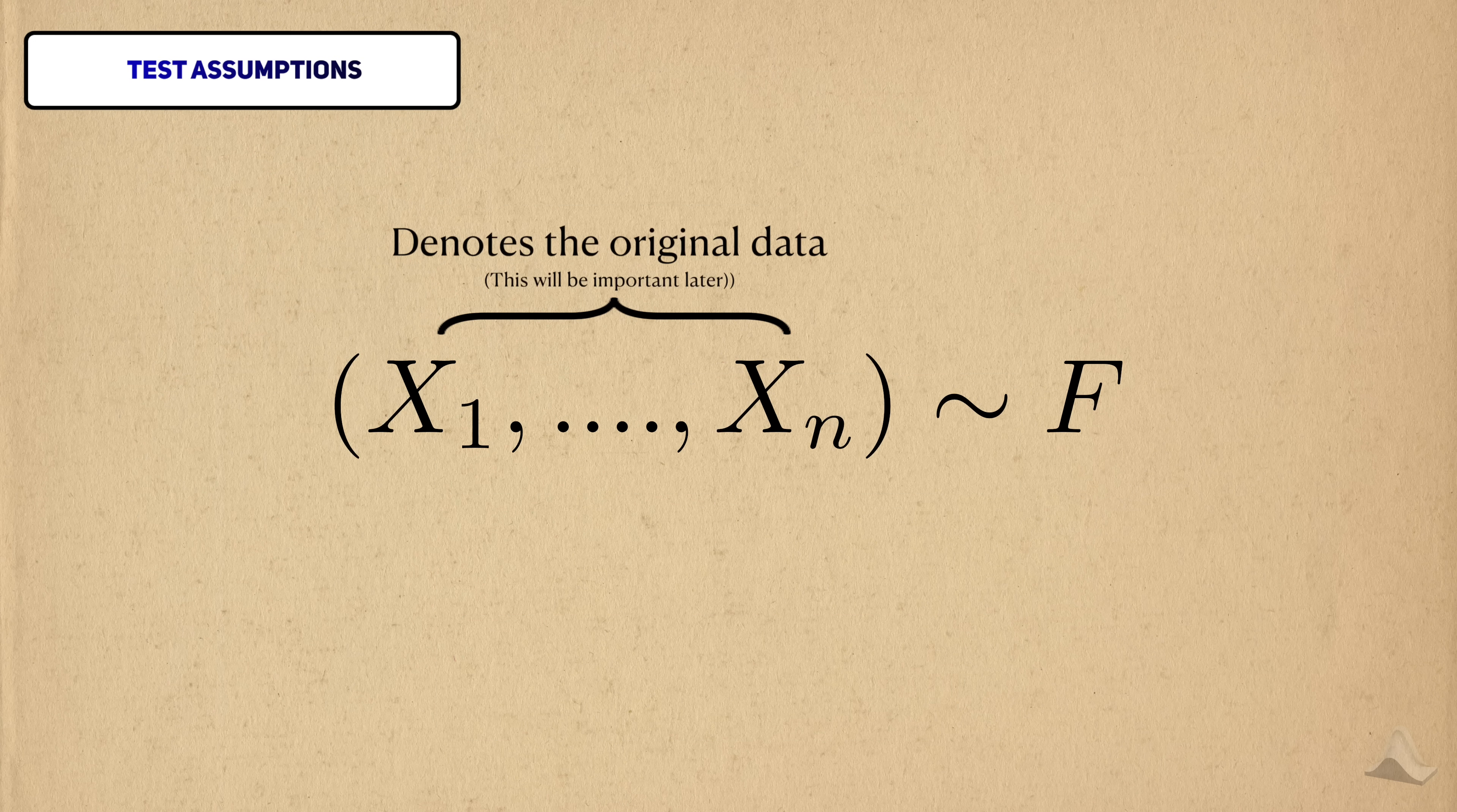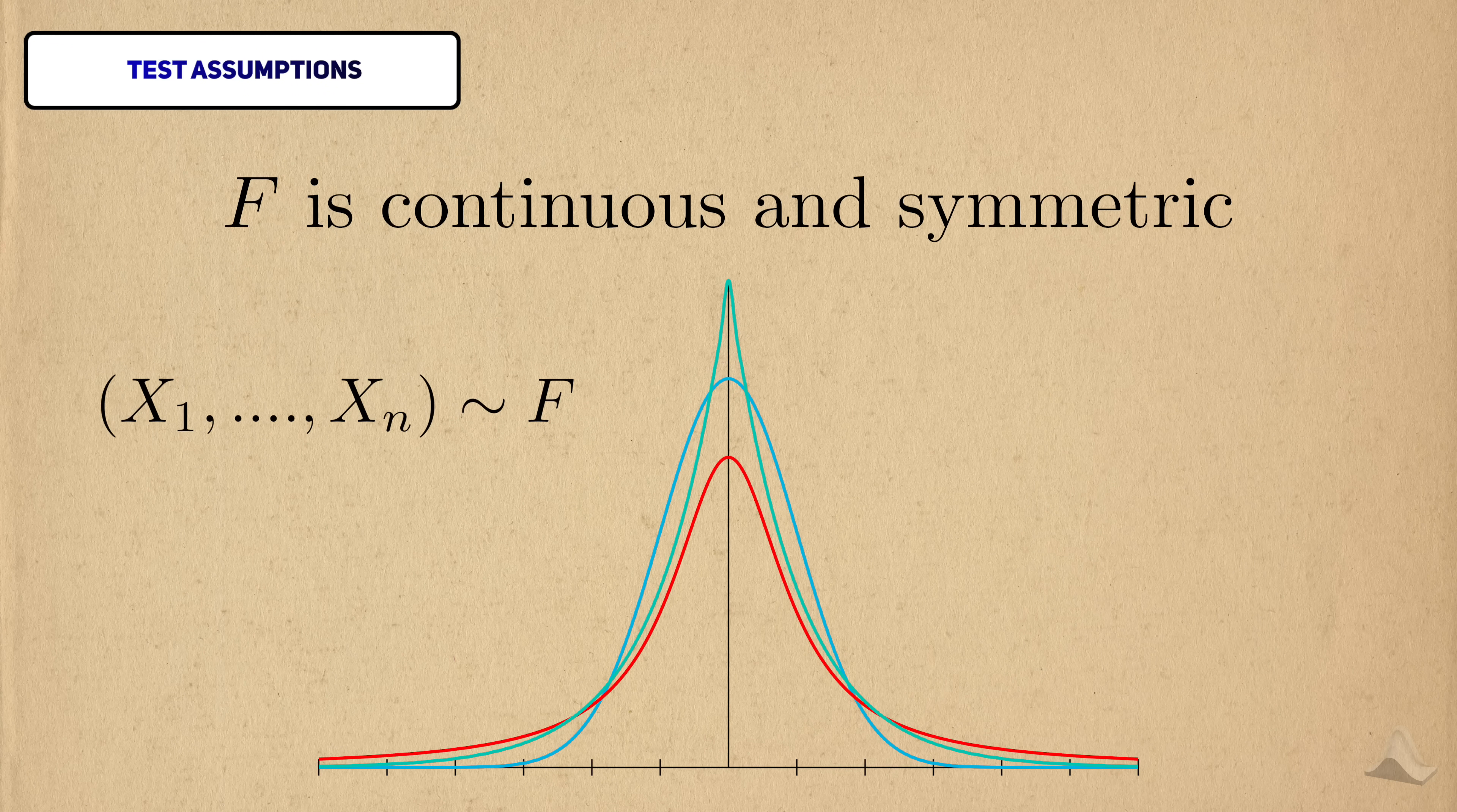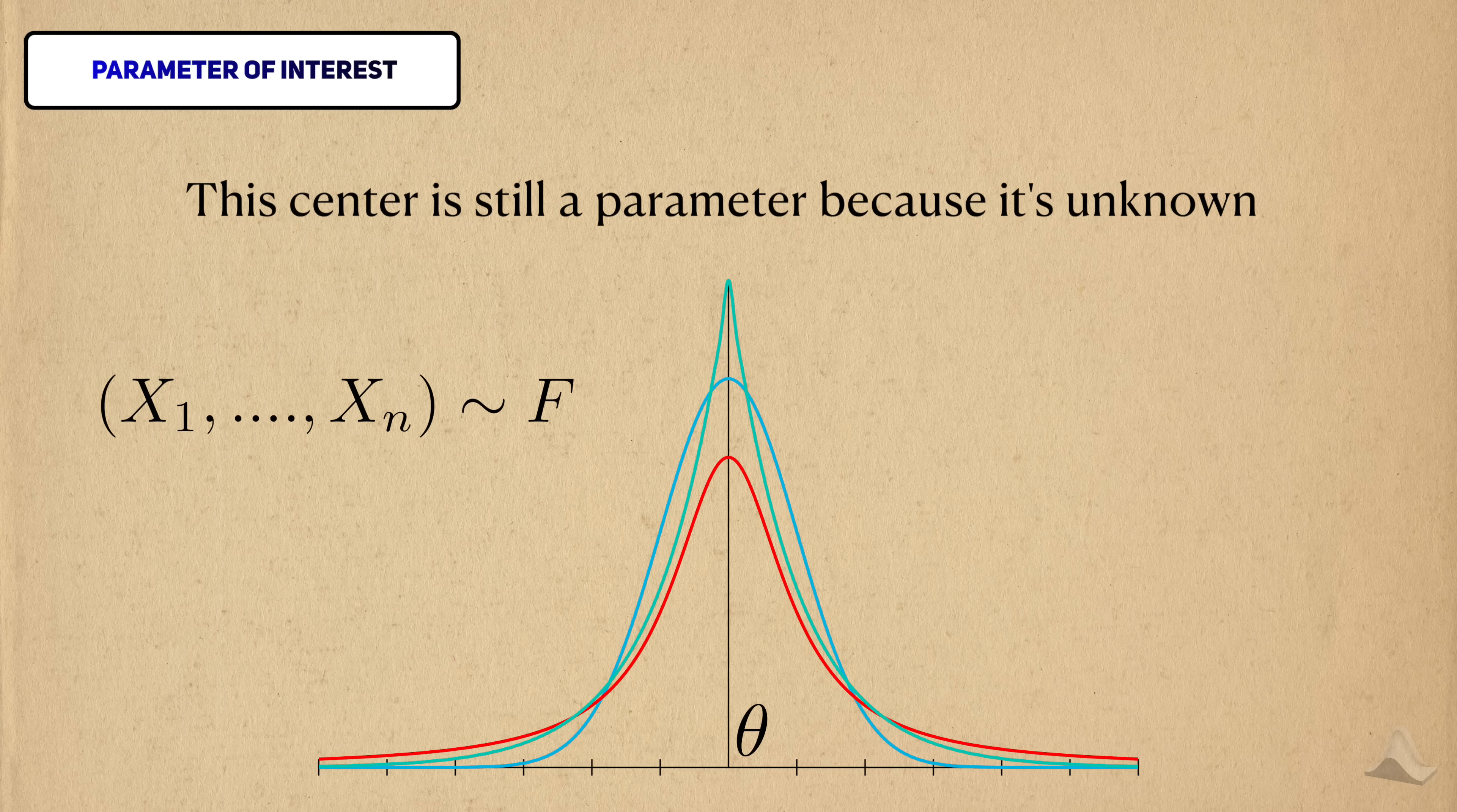I'll use my original notation for a dataset here. I'll say that the sample size is some number n instead of 10 like in my example. To denote a general distribution, we usually use a capital F to indicate some cumulative distribution function, or CDF. The signed rank test assumes that the observations come from some continuous symmetric distribution. Our parameter of interest is the center of this distribution, which we'll denote theta. Even though this is a non-parametric method, it doesn't necessarily mean that we get rid of all the parameters in the model. The center is still a parameter in the sense that it's unknown and we want to learn about it from our data.